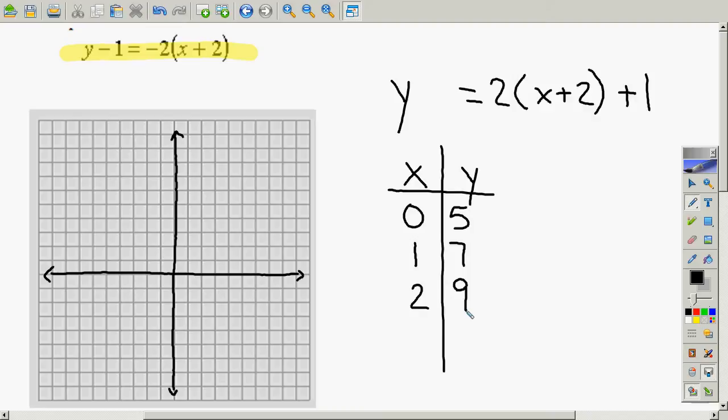So if we just plot those points, 0, 5 here. I'll plot this one first. 0, 5. 0, 1, 2, 3, 4, 5. It should go right there.